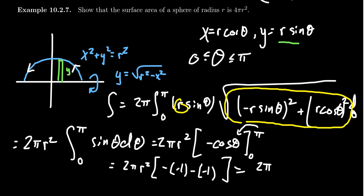So we get 2πr² times 2, and thus we get 4πr² like we predicted it would be.